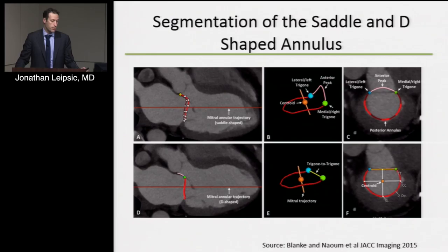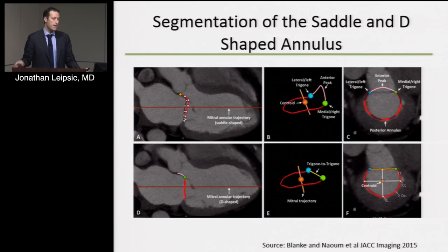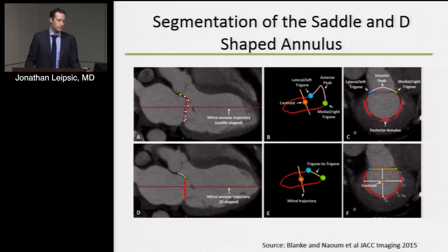That led us in 2014 to propose — not rocket science, but it seemed necessary — that if we're going to size the device, we need to size it not to the saddle-shaped annulus but to the D-saddled, or D-shaped annulus, with truncation of the mitral annulus at the level of the fibrous trigones. The fibrous trigones can be consistently identified using highly reproducible, very standardized methodology — such that you could take 10 readers in this room and by noon identify the trigones consistently — generating a D-shaped annulus defined by the trigones anteriorly, with an intercommissural or CC line through the centroid, and an A2-to-P2, or septal-to-lateral, distance.